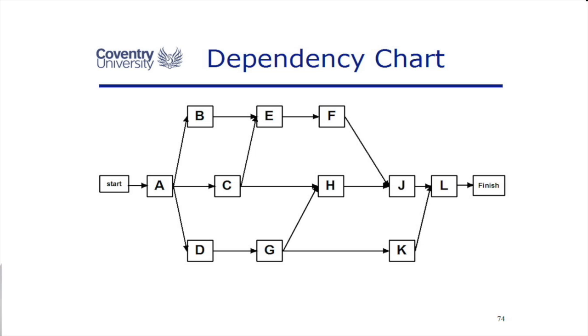Here's an example of a dependency chart. We've got a start task, we've got a finish task, we've got no loops, we've got no dangles. The start of the project, I can do task A. When A is finished, I can do tasks B, C, and D. I can't do E until B and C have finished. It's a dependency chart for the project.